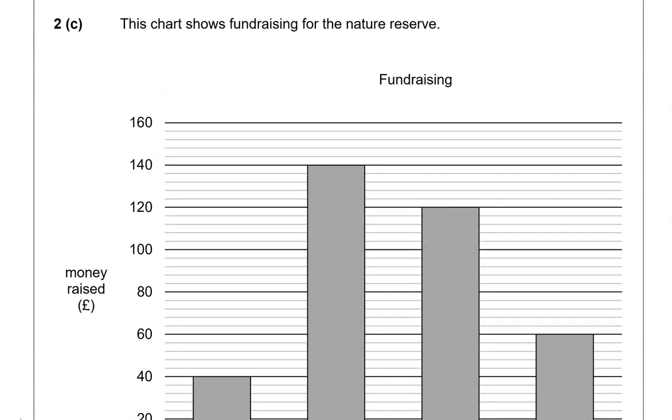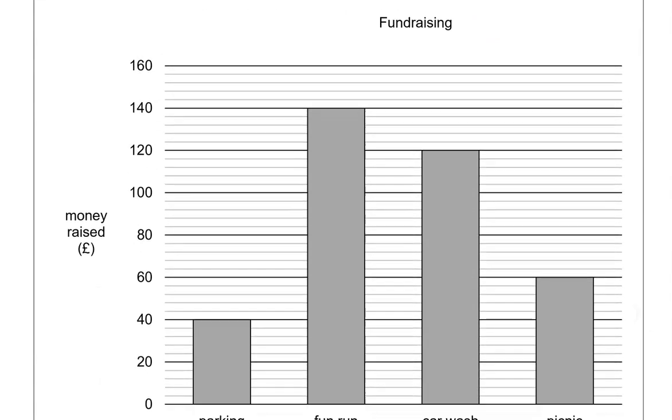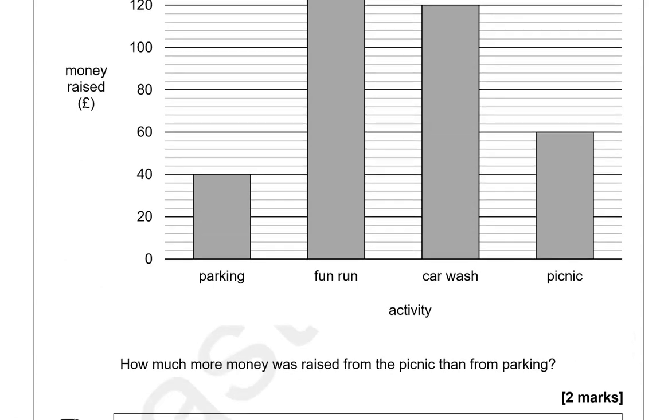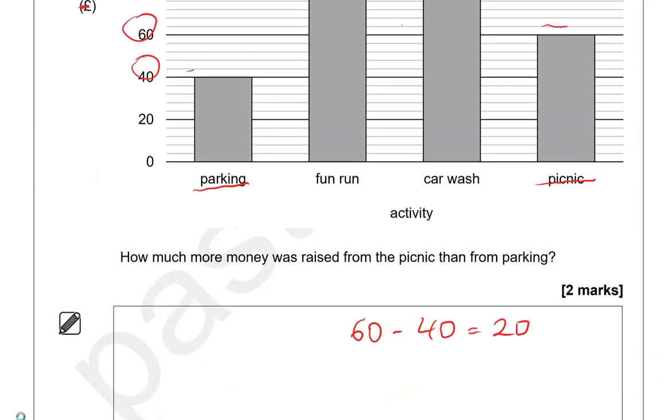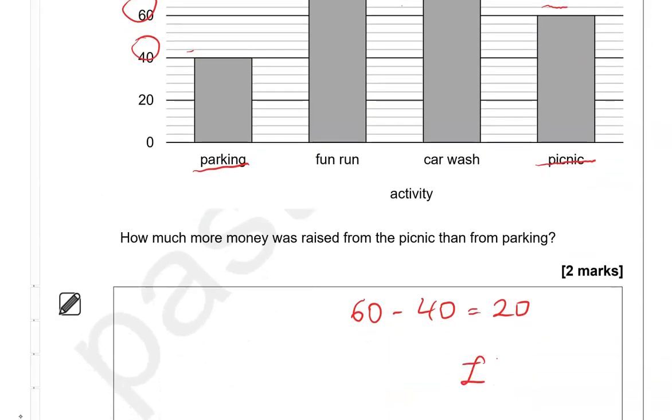This chart shows fundraising for the nature reserve. How much more money was raised from the picnic than from the parking? So there we have picnic and parking. Picnic, that goes up to 60. Parking, that goes to 40. So 60 take away 40. That gives us 20. But is that 20p or 20 pounds? That tells us that it is pounds. So we're going to write 20 pounds.